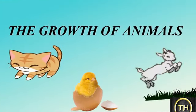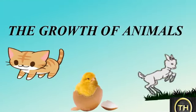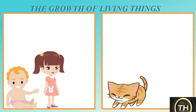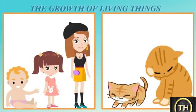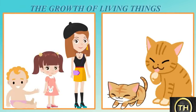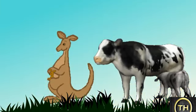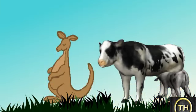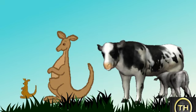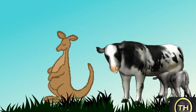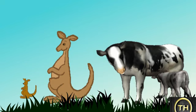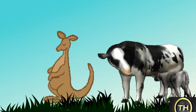Now we will learn about the growth of animals. There are stages of growth in every living thing. Growth is visible after birth, and thereafter for some time there is a stop in growth. The young ones of a cow, a goat, a cat, and a dog grow in their mother's tummy. After birth, the young ones feed and grow on their mother's milk.